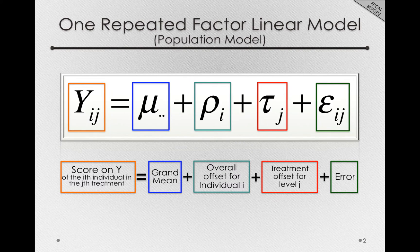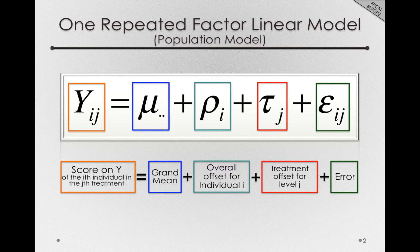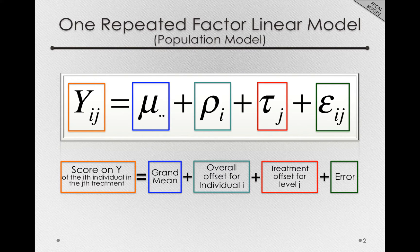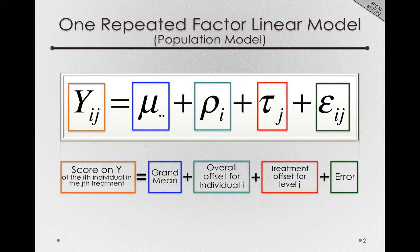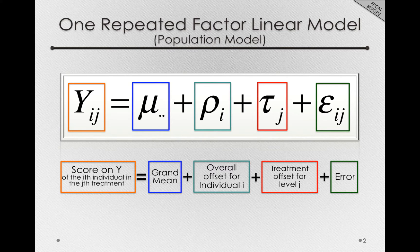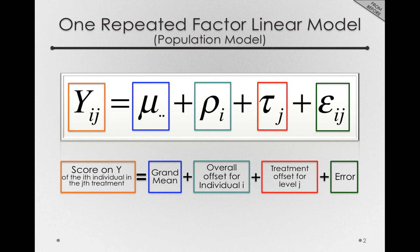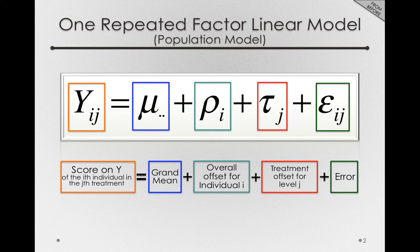Our repeated measures model we had before was relatively straightforward. We had the score on Y as a function of the grand mean, a row effect, that is the overall offset for some individual, a treatment offset, so the overall differences between the treatments we were applying, and finally some error.